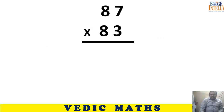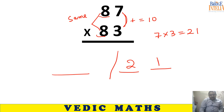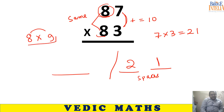Next example: 7 plus 3 equals 10, and the remaining digit is identical. Apply the shortcut: 7 into 3 equals 21 — write 21 in two blank spaces. First blank: identical digit is 8, multiply by next natural number — 8 into 9 equals 72. Final answer: 7221.